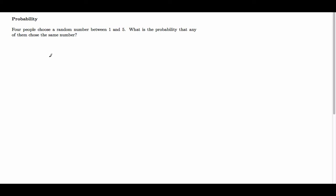So to do this, we're going to first find all the different probability combinations. We could have all four of them pick the same number, or three of them could pick the same, or two of them could pick the same.